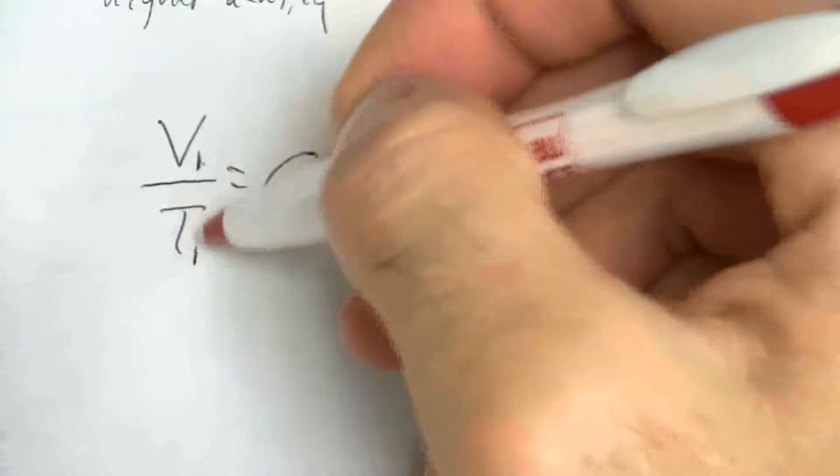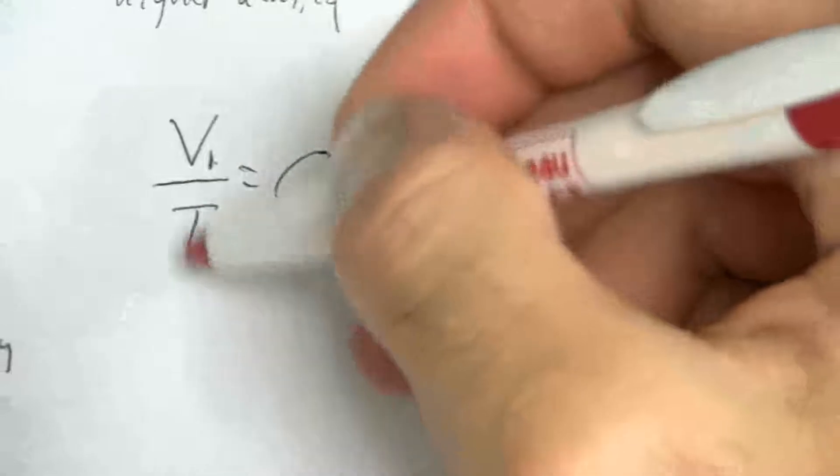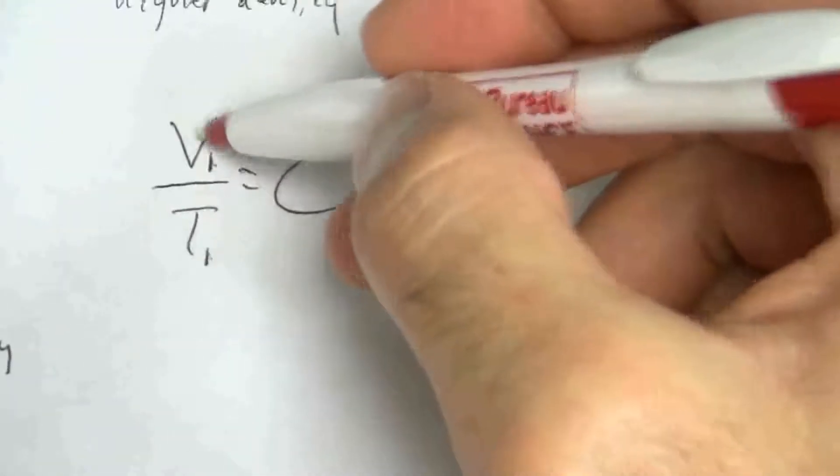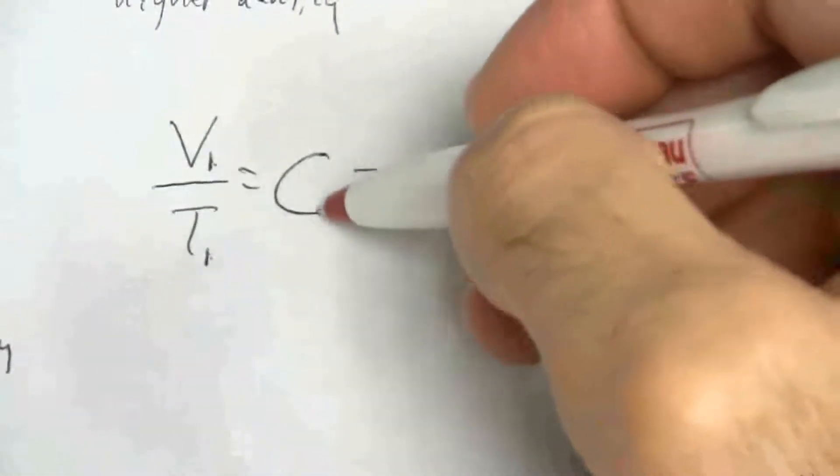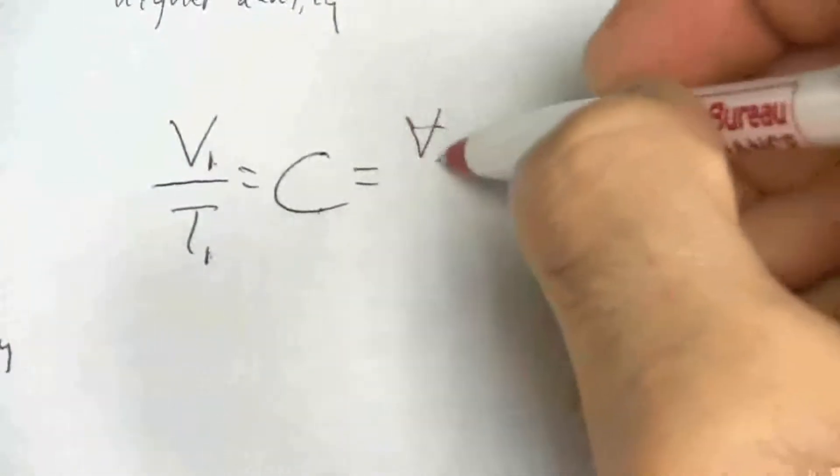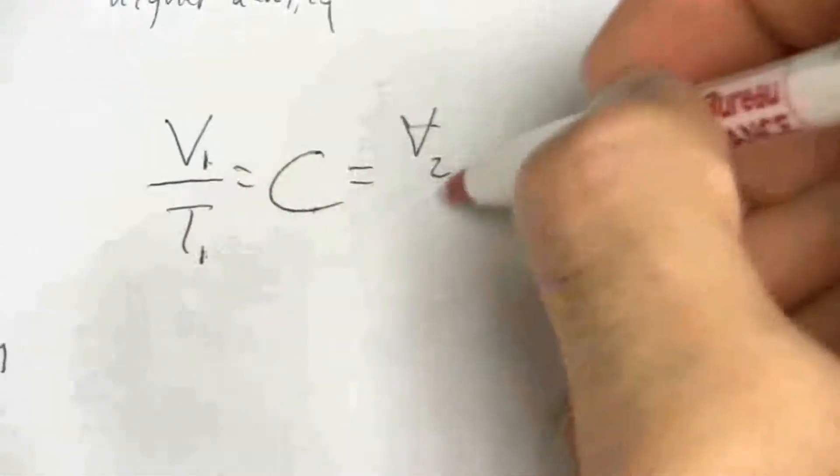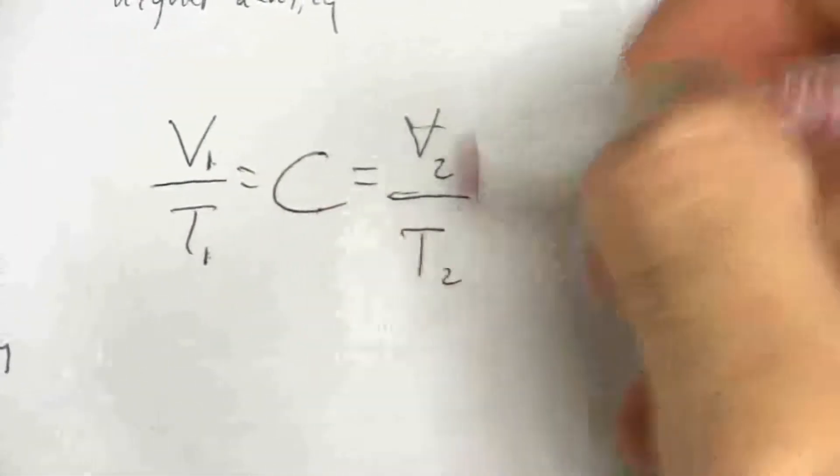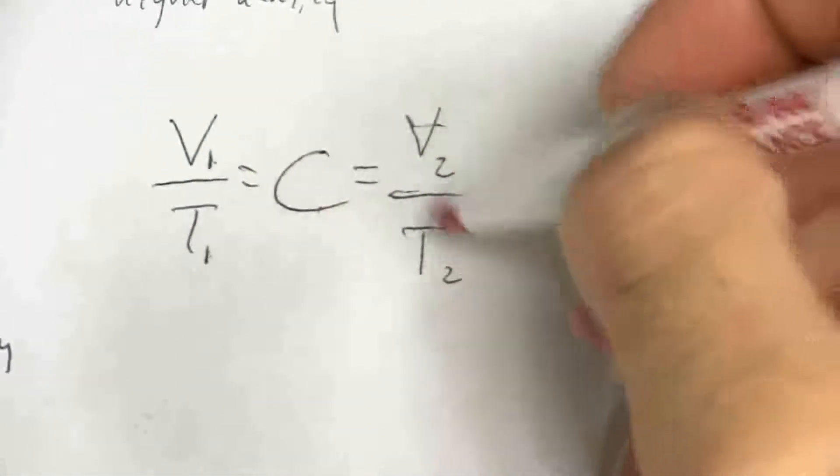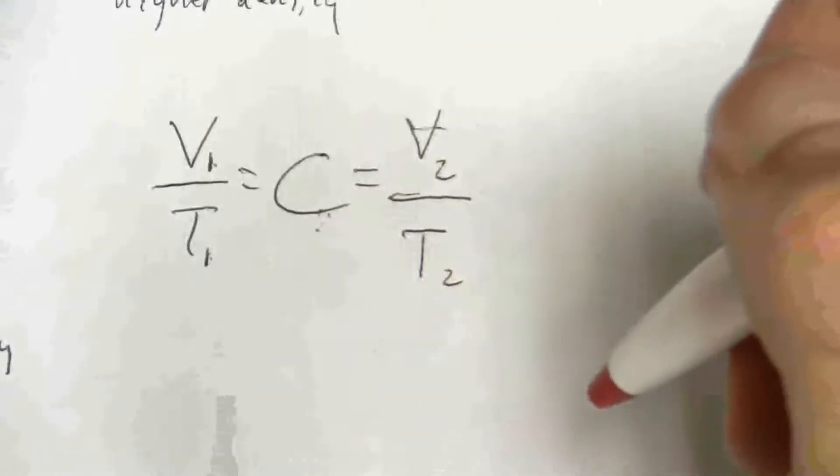My pressure, or rather my temperature changes, just to compensate that so that as the volume changes, when I divide it, the constant doesn't change. In other words, when I divide my initial conditions, it's the same as when I divide my final conditions.